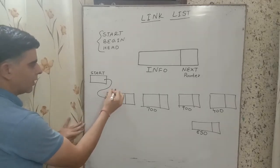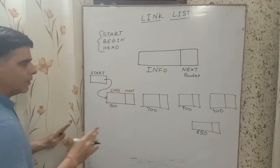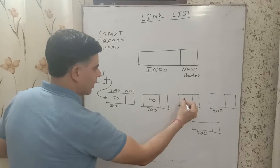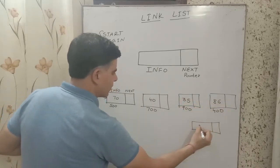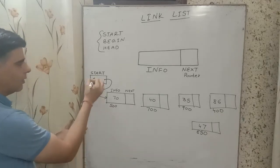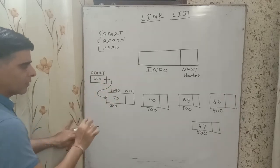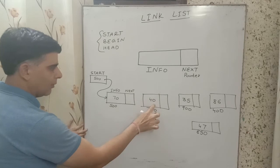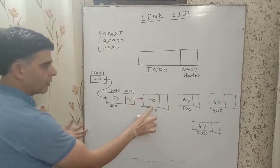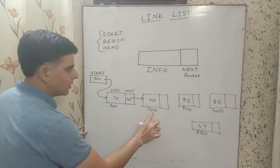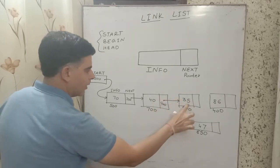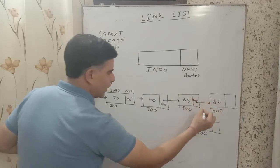Each node has an info part and a next part. The data values stored are: first node contains 70, second contains 40, third contains 35, fourth contains 86, and the last node contains 47. The first node is stored in start. Then the first node's next part points to address 700, the second node's next part contains the address of the third node, the third contains the address of the fourth, and the fourth contains the address of the fifth node.